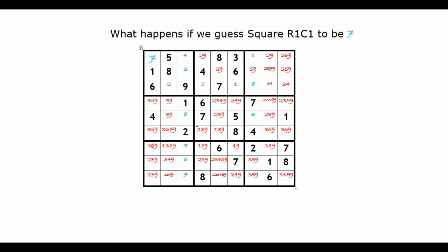We cannot use the single-candidate technique anymore. How about we use elimination? These 2 squares take 2, 3, and 9, so we can remove 3 and 9 from other empty squares in the row.